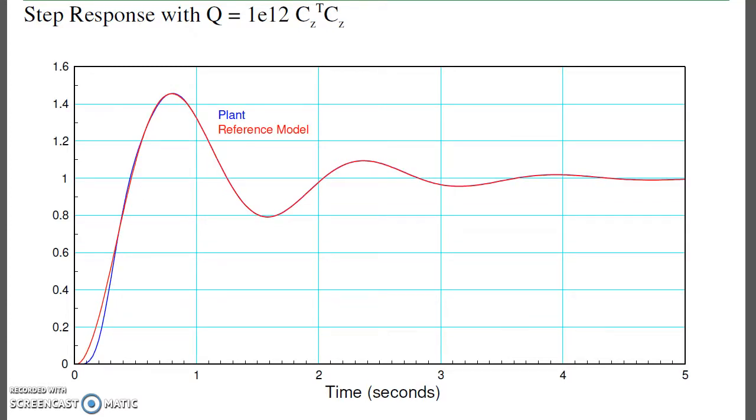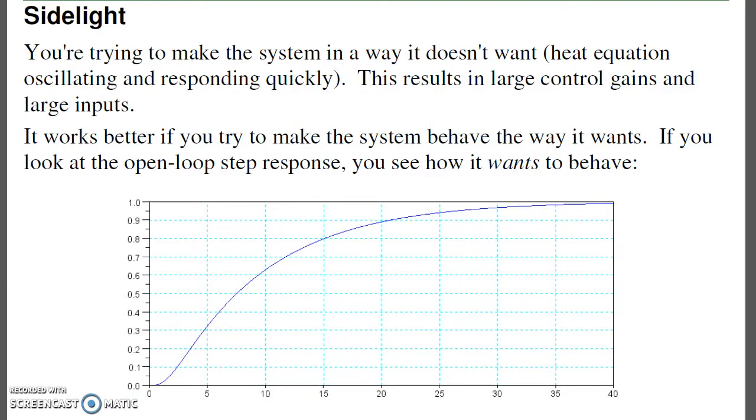What that shows is, with LQG, LTR methods, and a servo compensator, I can force the plant to behave like the reference model, almost dead on, even when the plant doesn't want to behave that way. The gains I get are a little bit unreasonable, but that's because what I'm trying to do is something the plant doesn't want.